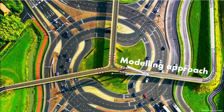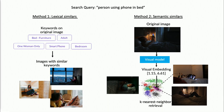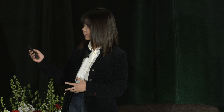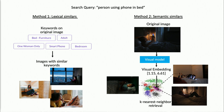Now that we have a better understanding of the fuzzy similar image problem, we can decide on a modeling approach. Let's use the search query 'person using phone in bed' as an example, with the user's interacted image on the top right. Method one is lexical similars: we use the keywords photographers add to the original image and find other images with similar keywords. These images contain the same objects, but depending on how keywords are set up, the relationship between objects isn't guaranteed to be identical — for instance, the person might be using the phone next to a bed instead of in bed.